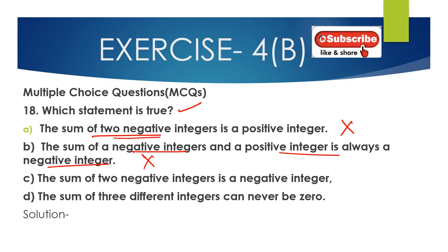Option C: the sum of two negative integers is a negative integer. This is correct. For example, minus 5 plus minus 3 equals minus 8 — we add 5 and 3 to get 8, then place the negative sign, giving minus 8. So option C is true.